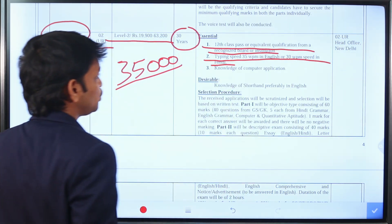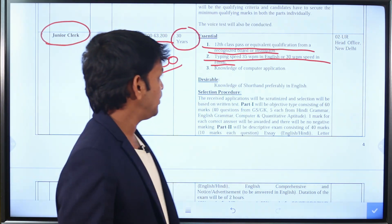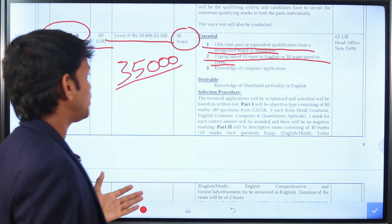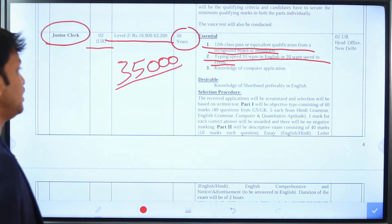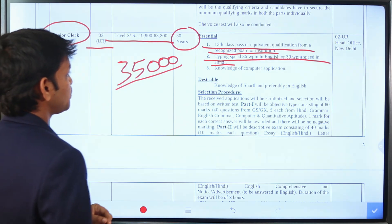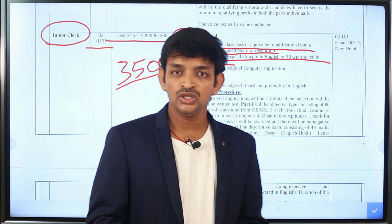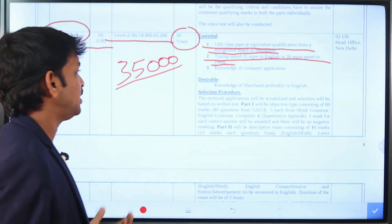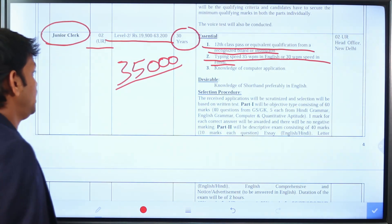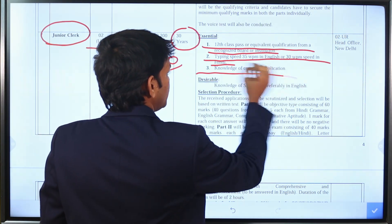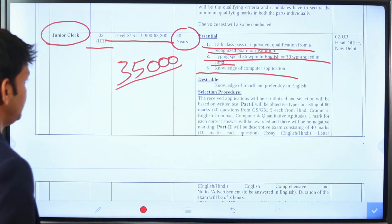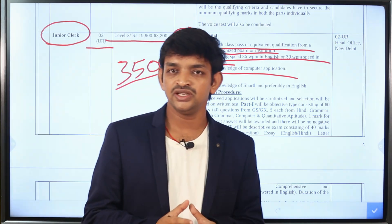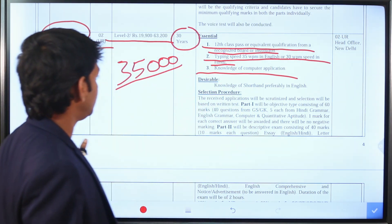You may choose your preferred language. If you type in English, the required speed is 35 words per minute. If you type in Hindi, you need 30 words per minute. You must also meet the intermediate or equivalent qualification and eligibility criteria.